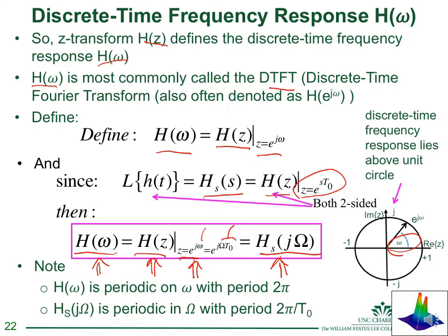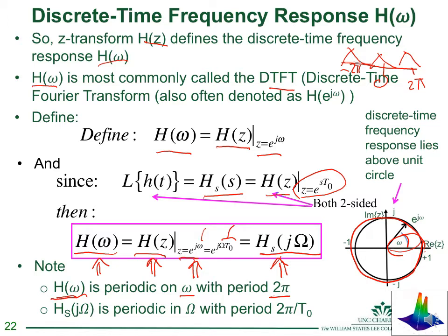H(ω) is periodic with period 2π because it corresponds to the discrete-time Fourier transform. Just as the discrete-time Fourier transform shows spectral repetitions every 2π, the unit circle comes back to the same value every time you rotate by 2π. Going around the unit circle every 2π you see the same value, explaining the periodicity.